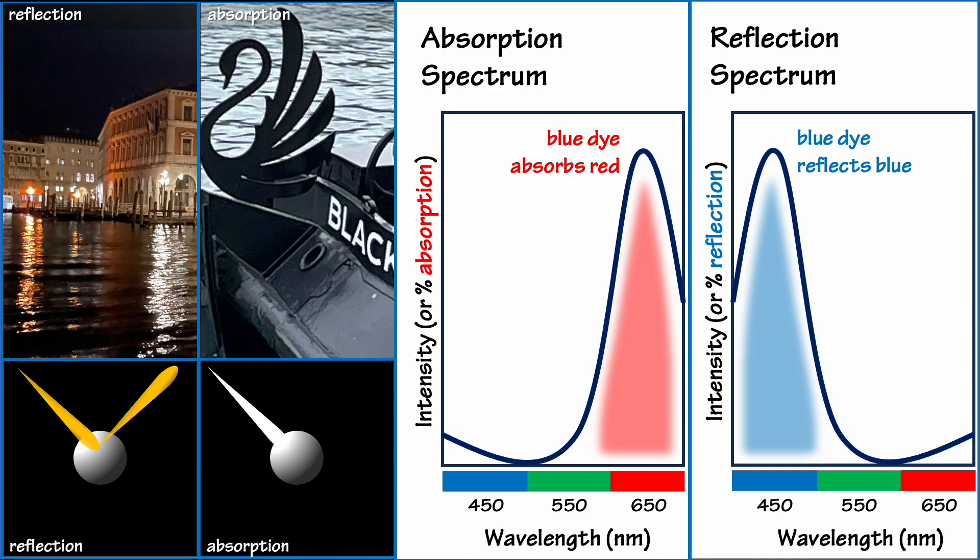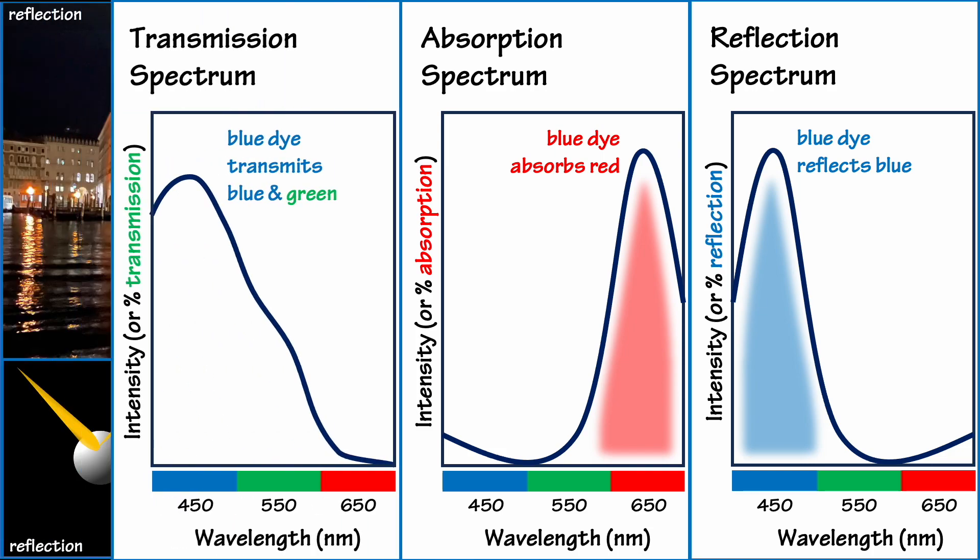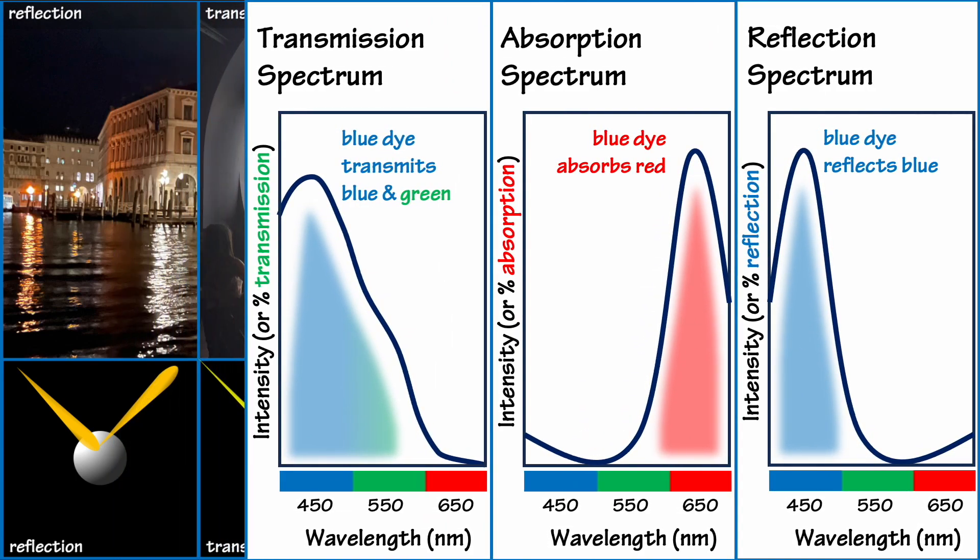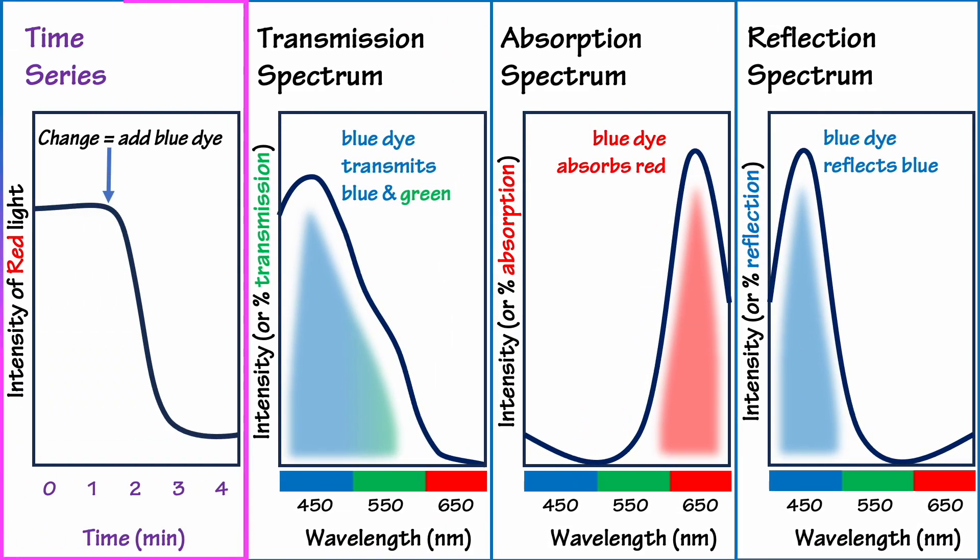We can also make a graph showing which wavelengths are transmitted through a material. Light shining through a container of the dye in blue juice would be absorbed at red wavelengths and transmitted at blue and green wavelengths. These three graphs are similar to each other because the x-axis is always wavelength. However, we can also do something different and put time on the x-axis. This type of graph is called a time series, and it shows us how things change with time as we conduct our experiment.